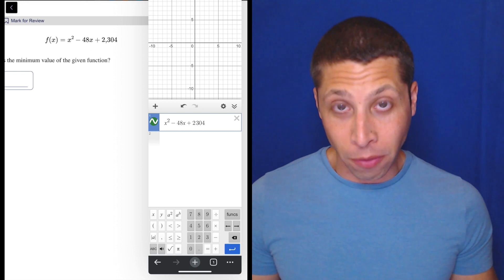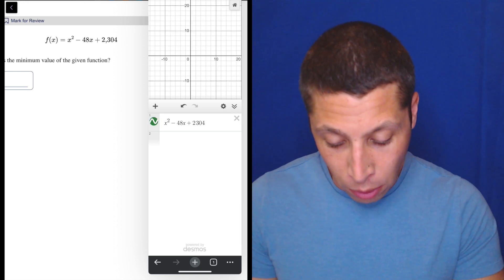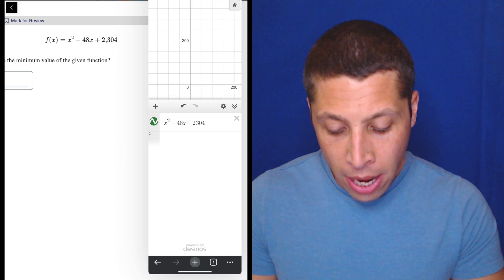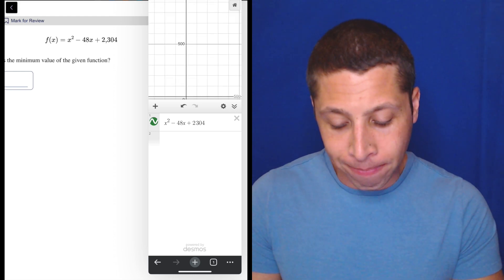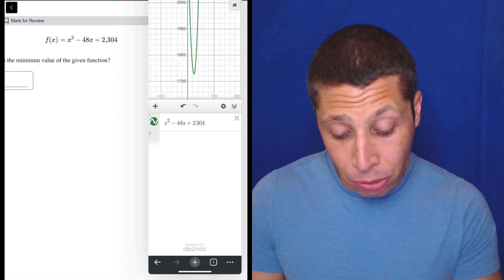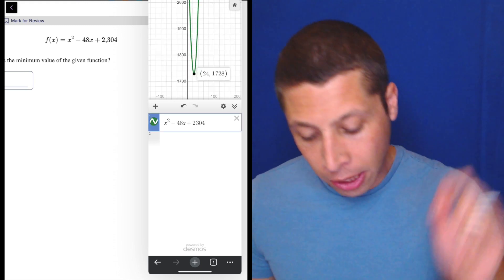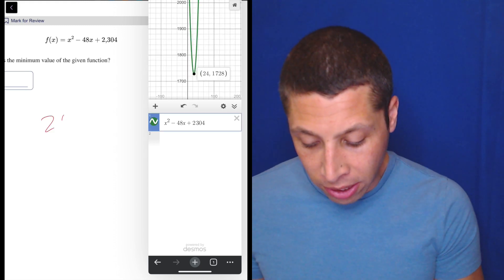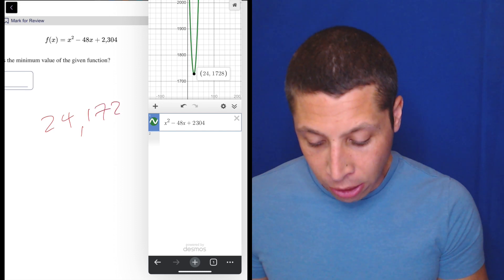Of course it's off the screen because those are some big numbers, but that's okay. Just use your fingers if you have a tablet and zoom out. If you have a laptop, the zooming is a little bit harder - that's why if you can bring a mouse, you're probably better off. But here we go. Once we get it, we get 24 and 1728.